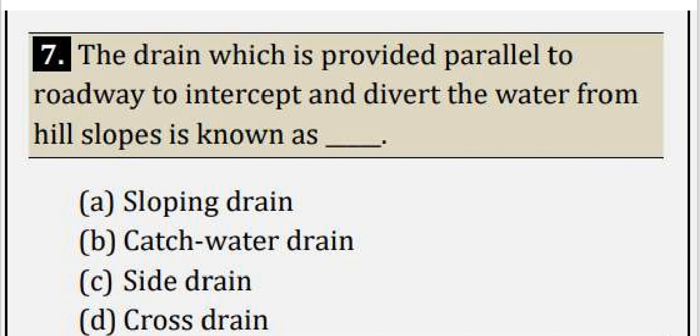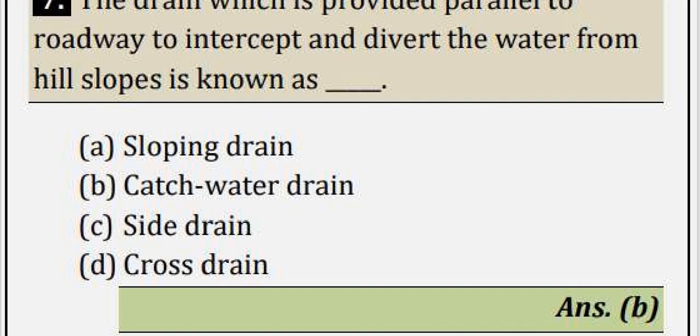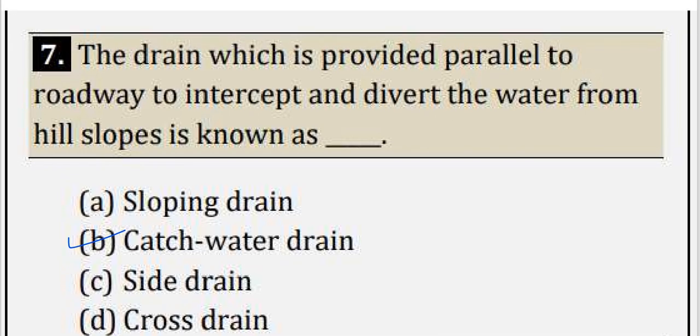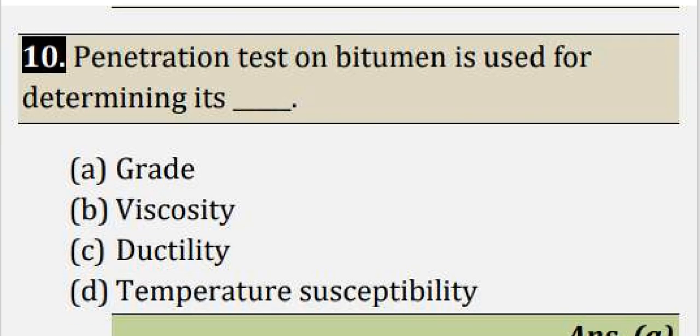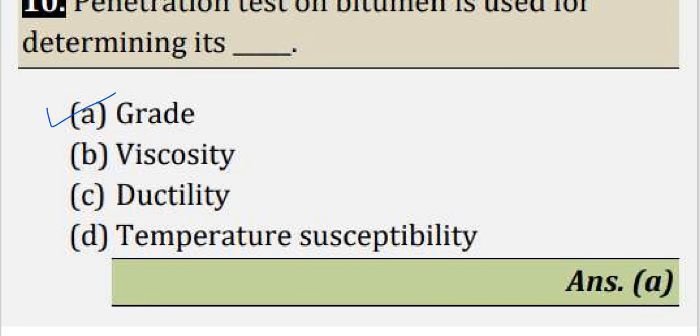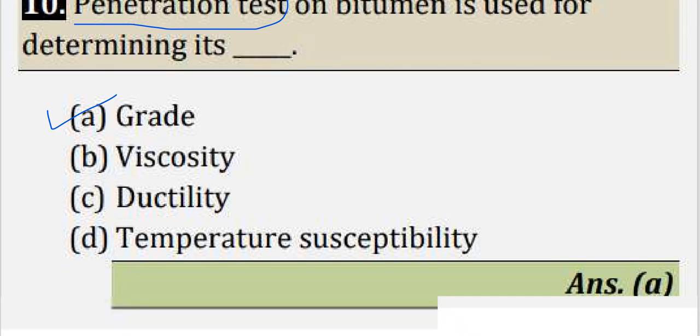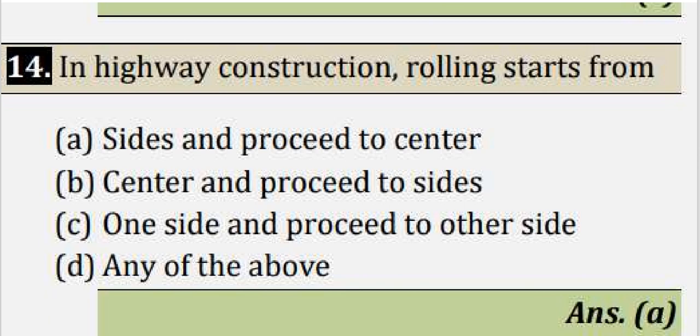The drain which is provided parallel to the roadway to intercept and divert the water from the hill slopes is known as what? The drain that is parallel to the roadway to intercept and divert water from hill slope is catch water drain. Next, penetration test: This test is for bitumen properties. Penetration test measures which property? The grade of bitumen is measured using penetration test.